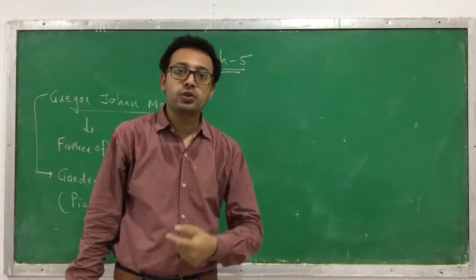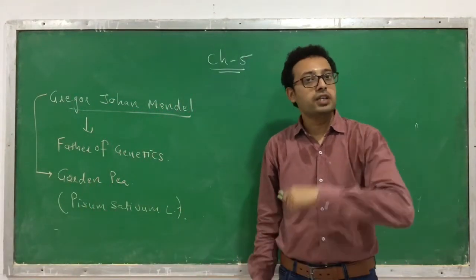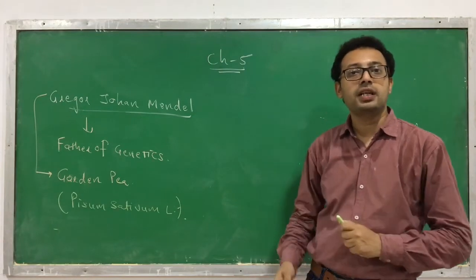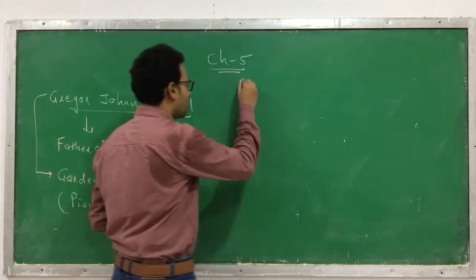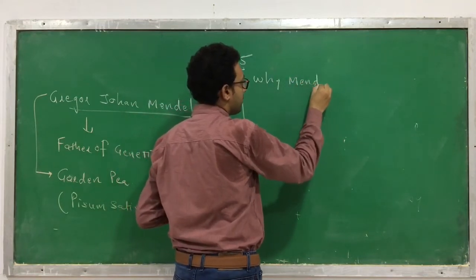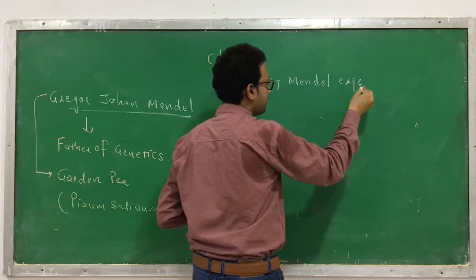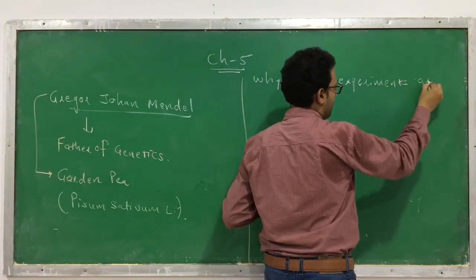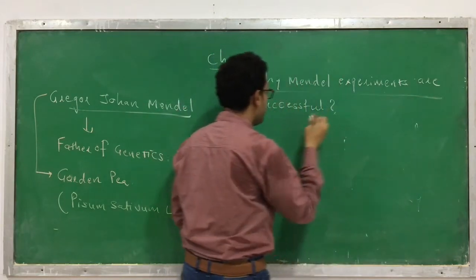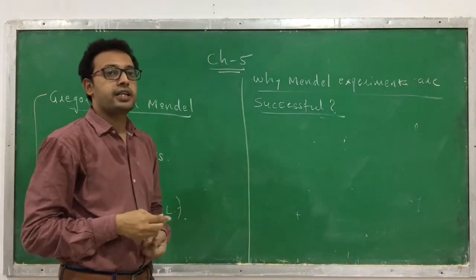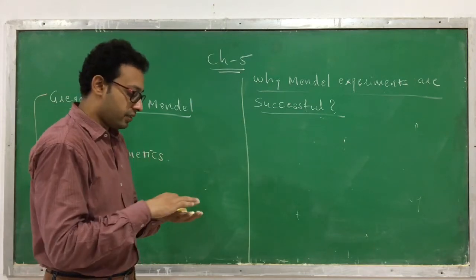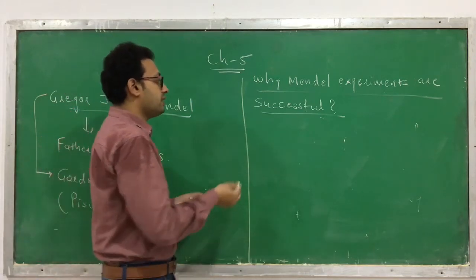Mendel has done this scientifically and achieved success. There are a few reasons why Mendel's experiments are successful, which might be asked in exams. The first reason: he selected the garden pea plant, Pisum sativum, which is easy to cultivate in the ground.